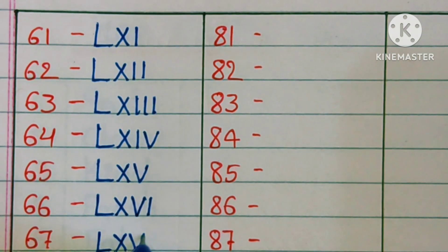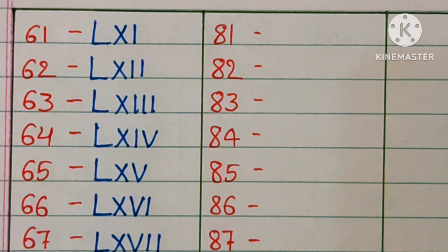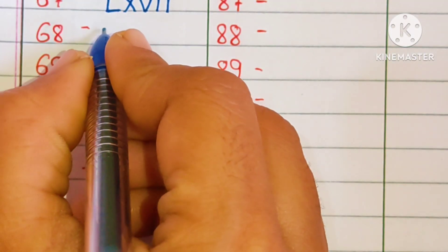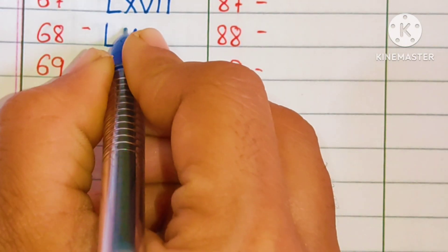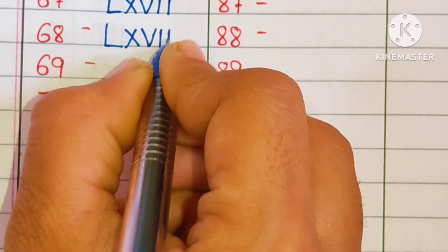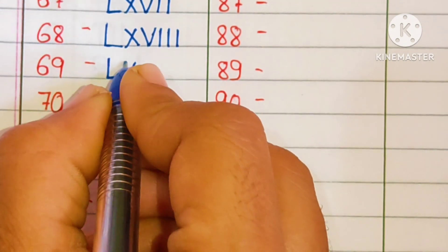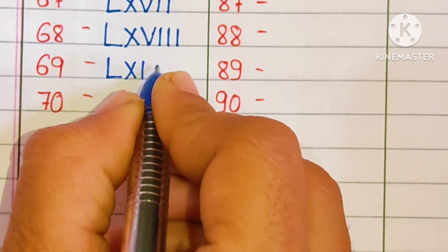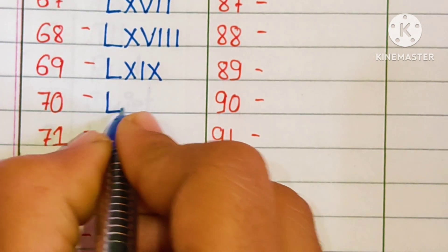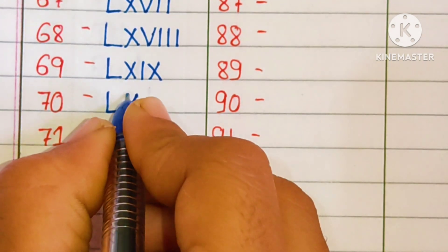61: LXI. 62: LXII. 63: LXIII. 64: LXIV. 65: LXV. 66: LXVI. 67: LXVII. 68: LXVIII. 69: LXIX. 70: LXX.